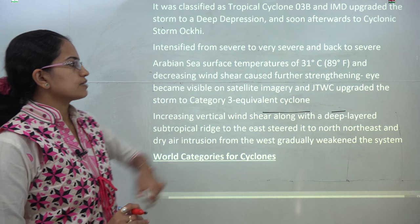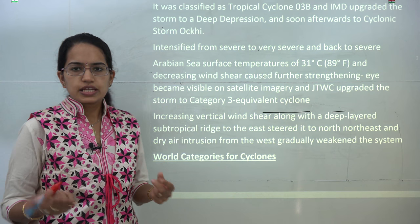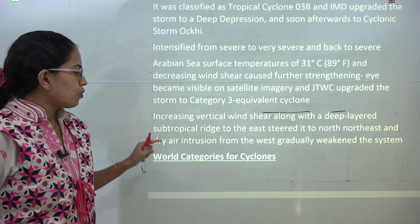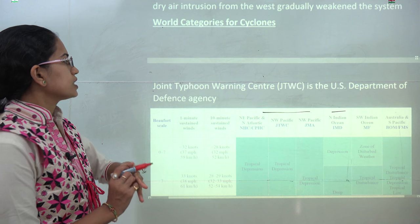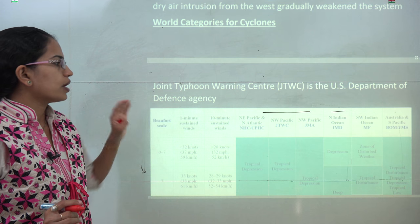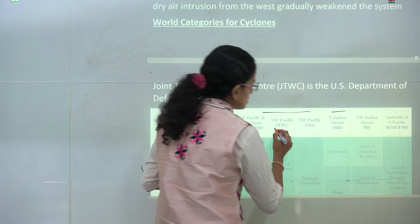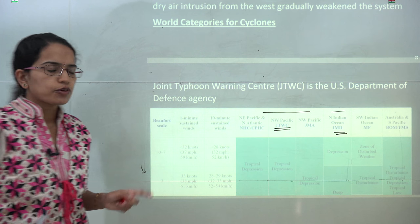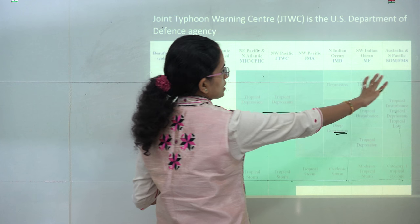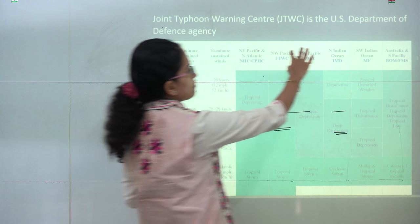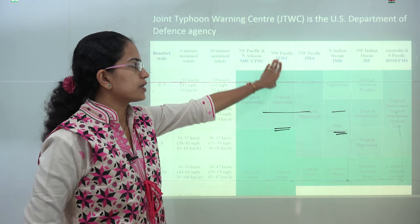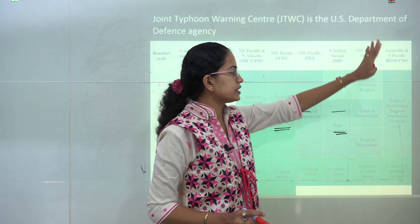The sea surface temperature was around 31 degrees Celsius, and various satellite imageries were constantly monitoring the system — an intact warning system at work. The Joint Typhoon Warning System, known as JTWC, is a US Department of Defense agency. The JTWC and IMD classifications are the most important to remember. JTWC covers the North West Pacific, IMD covers the North Indian Ocean, and MF covers the South West Indian Ocean.